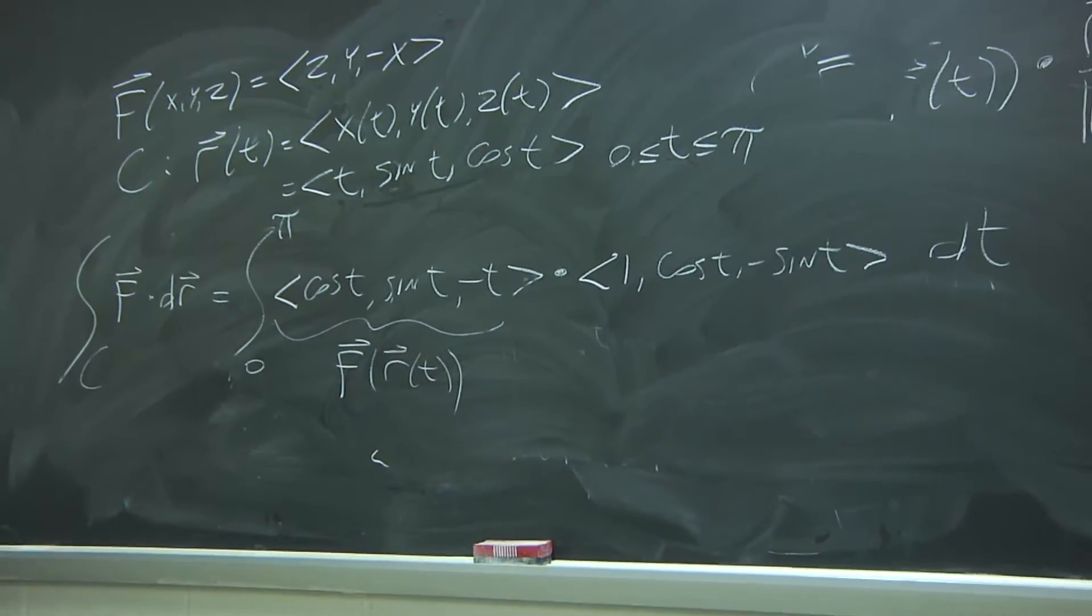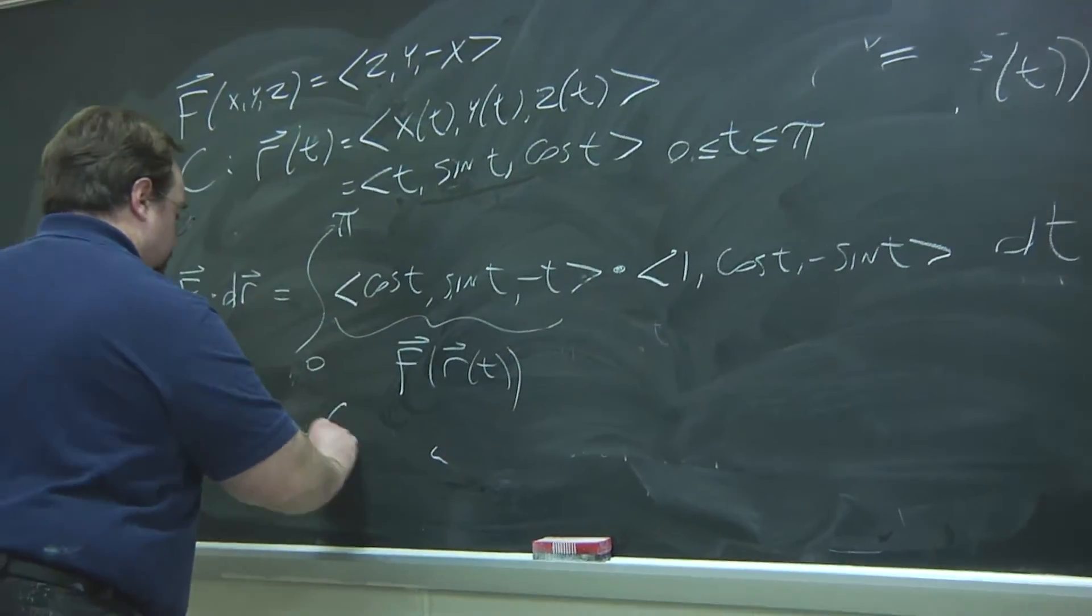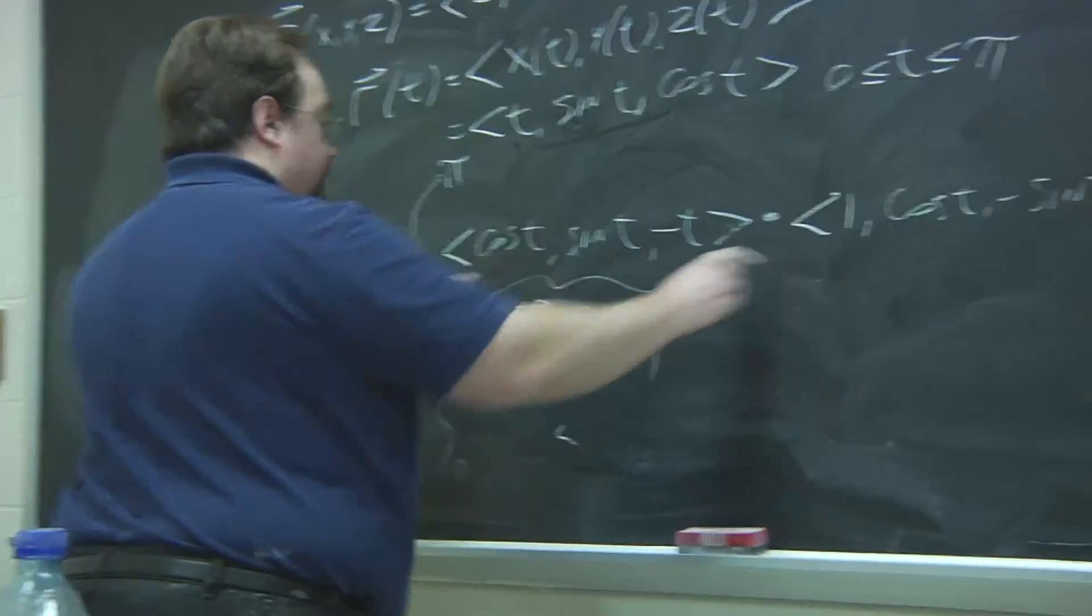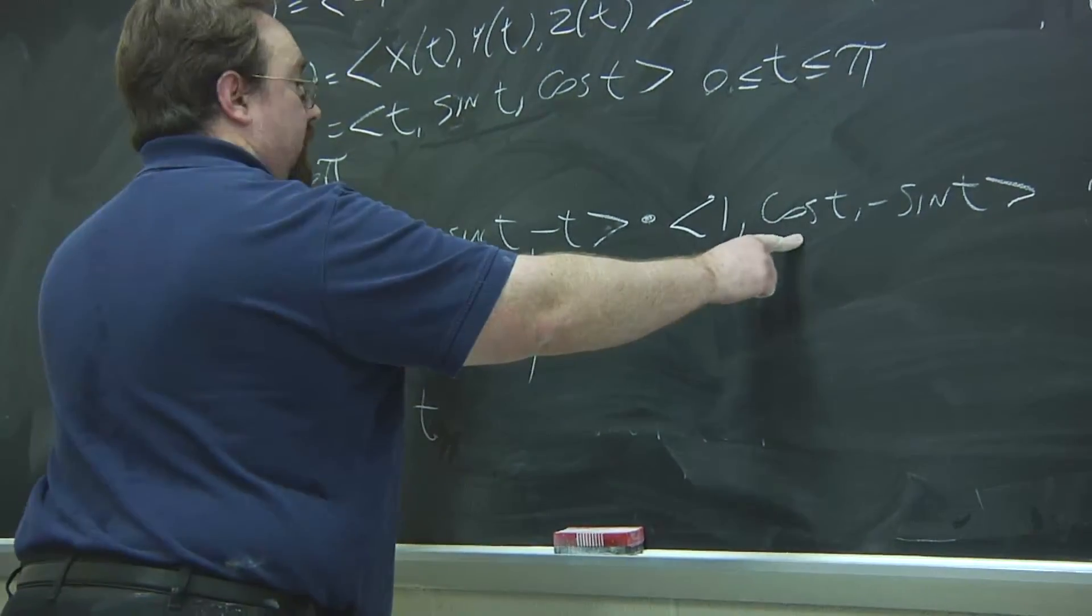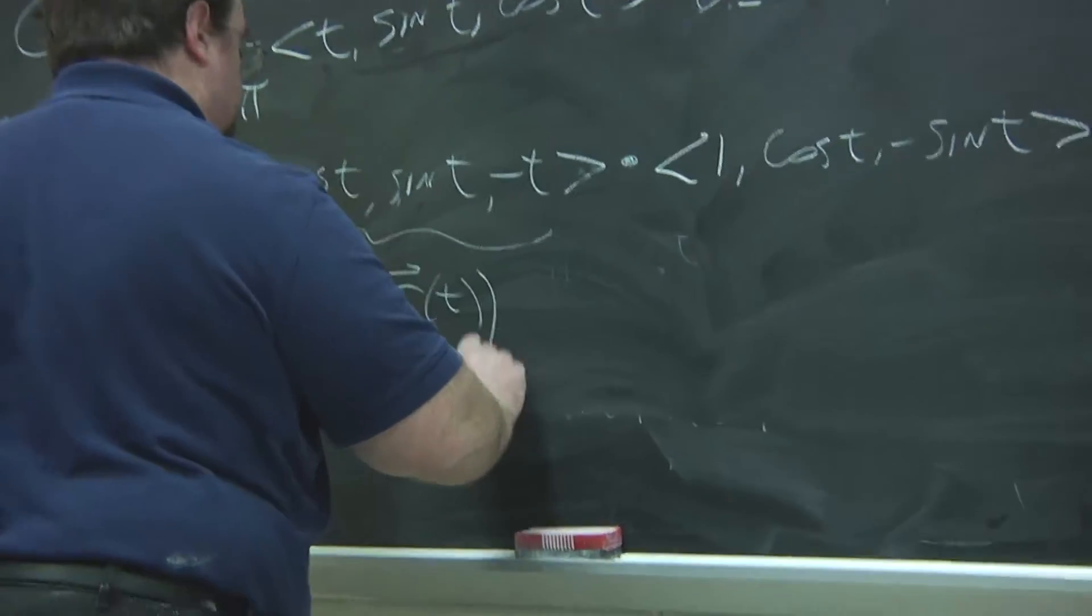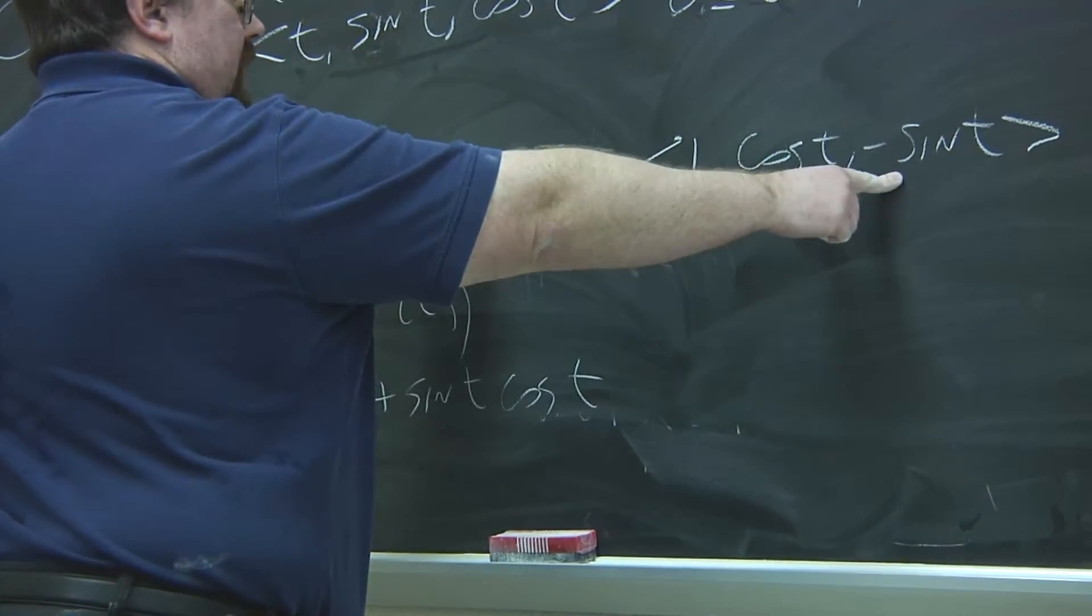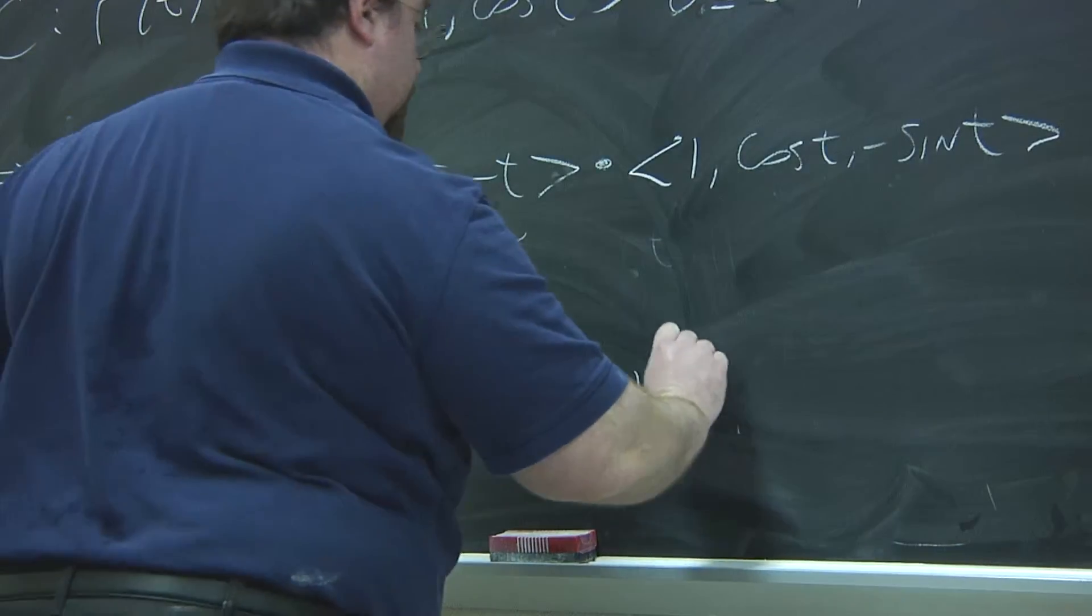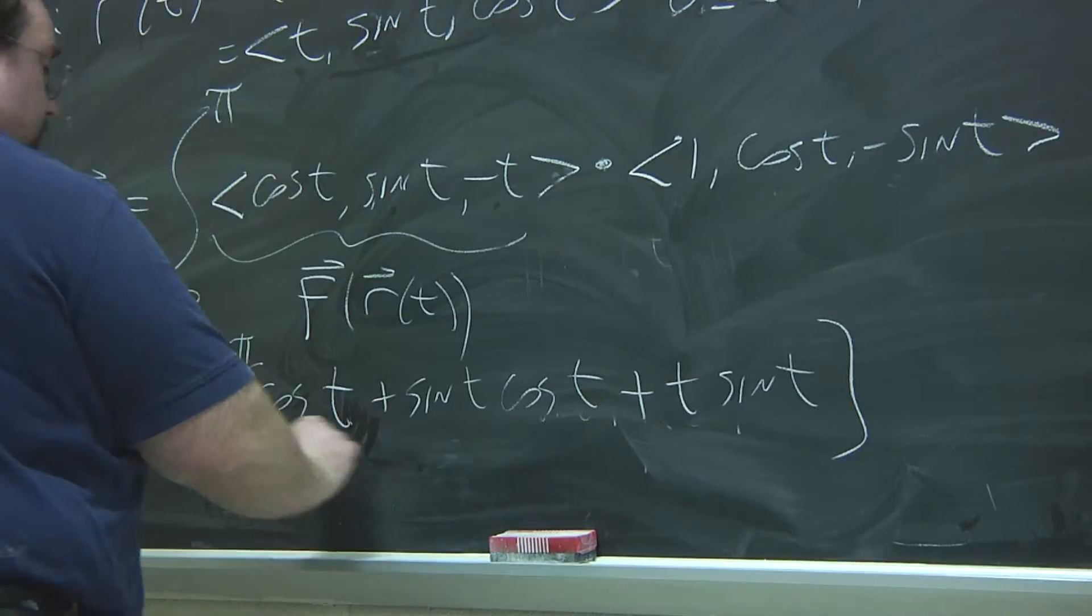So, now you can carry out the dot product. So, we'll have cosine t, plus sine t, cosine t, plus t sine t, dt.